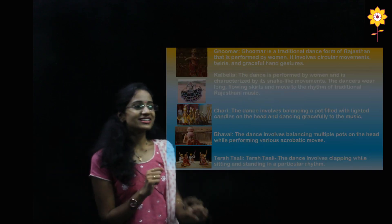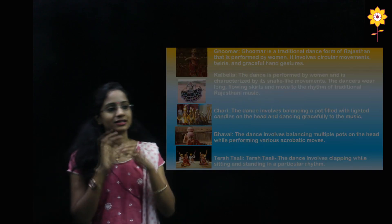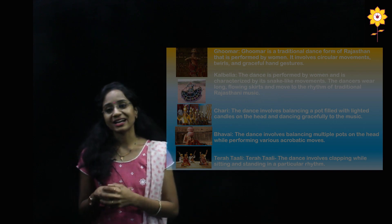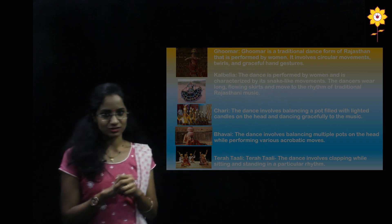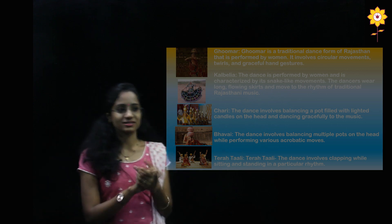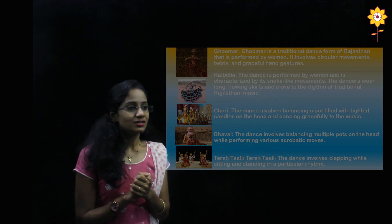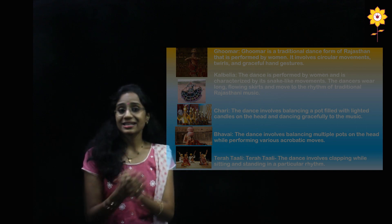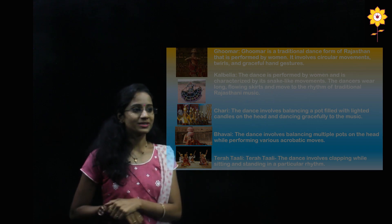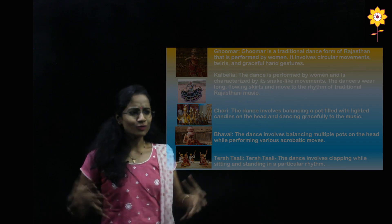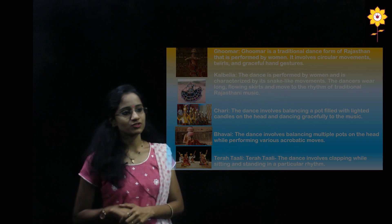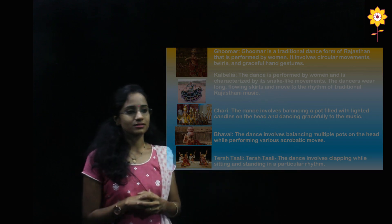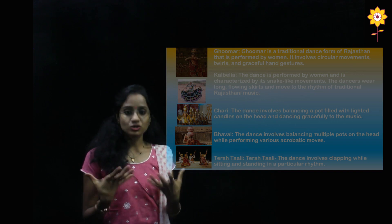Ghumar is a traditional dance form of Rajasthan performed by women — it involves circular movements, twirls, and graceful hand gestures, and is very popular and widely witnessed. Kalbelia is performed by women and is characterized by snake-like movements. The dancers wear long flowing skirts and move to the rhythm of traditional Rajasthani music, featuring very fluidic movements and costumes that are very important to this dance form.